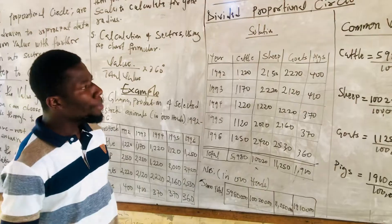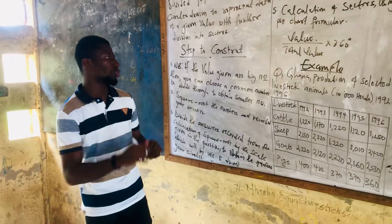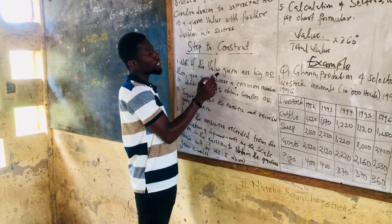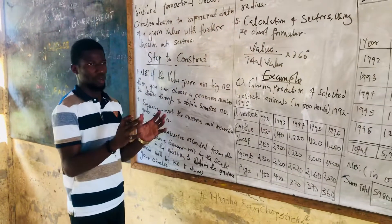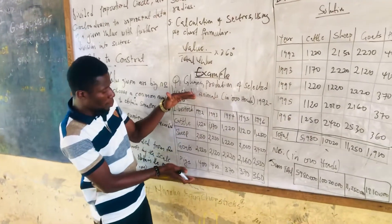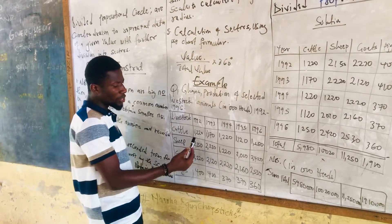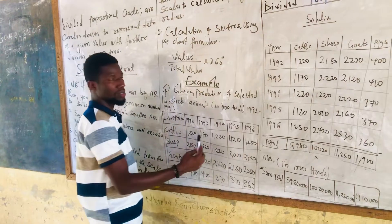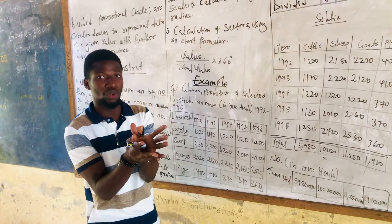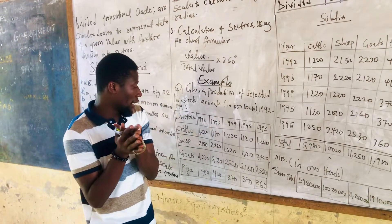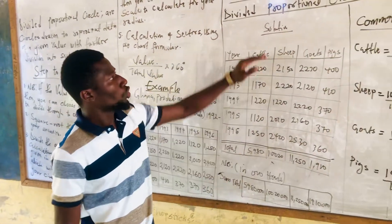Let's go to our solution. Before we can find the totals, per the table we notice that to find the total value, we add all the values of the cattle for each year from 1992 to 1996 to obtain the total value of cattle recorded for Ghana from 1992 to 1996.